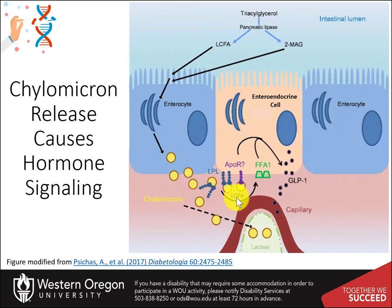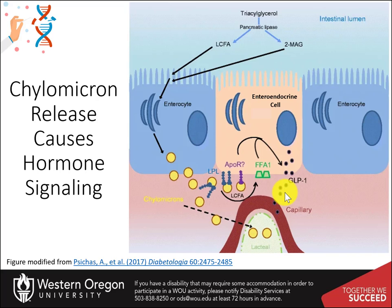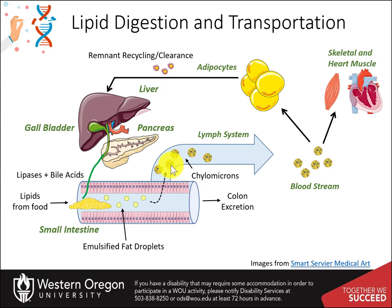Or by the hydrolysis of TAGs carried by the chylomicrons to release free fatty acids. Free fatty acids can then activate G-protein-coupled receptors such as FFA1, and lead to the release of GLP-1 and GIP. These hormone peptides promote beta cell proliferation in the pancreas and stimulate the glucose-dependent secretion of insulin. They are also thought to initiate feelings of satiety or fullness. GLP-1 agonists, such as Trulicity, have been shown to reduce blood glucose levels and are currently being marketed to patients with type 2 diabetes.